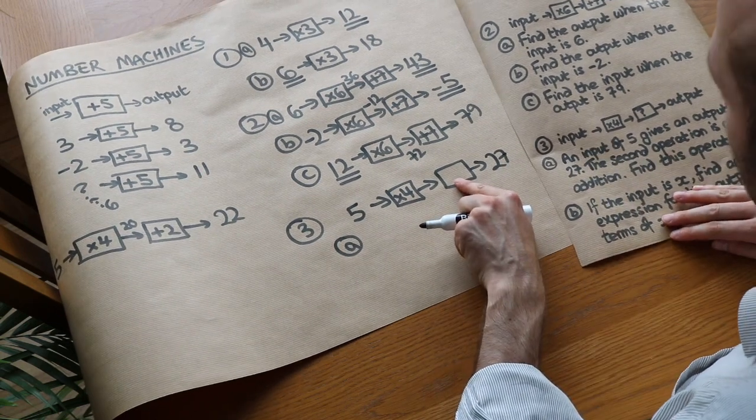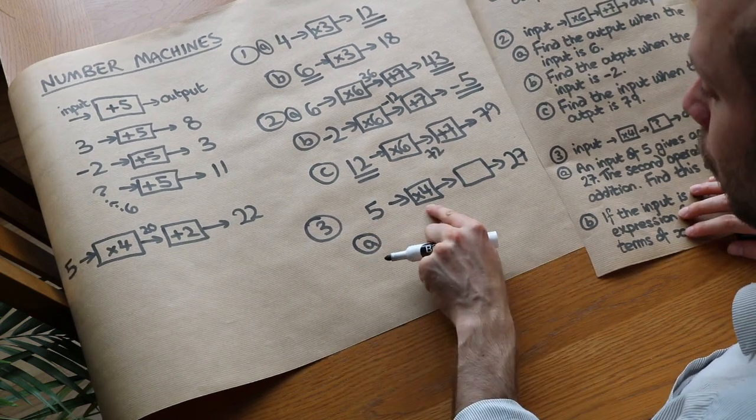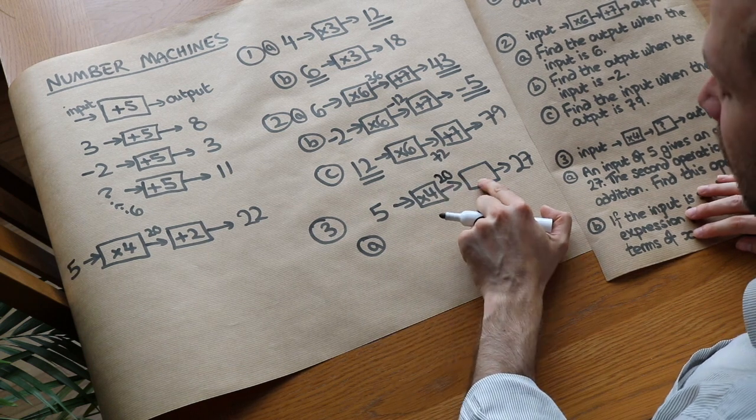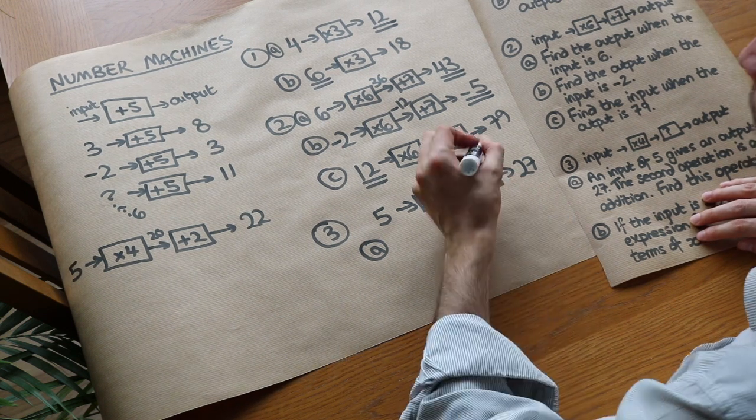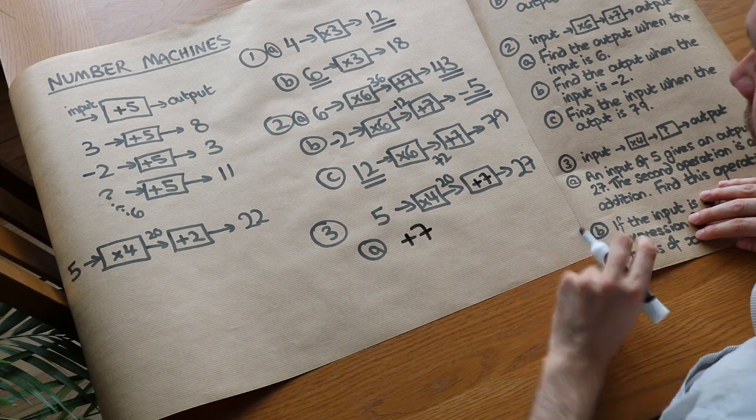So it's going to be plus something. So well, 5 times 4, that gives us 20. And then we've got to think, 20, if we have an addition and that gave us 27, what have we done to the 20? Well we've added 7, haven't we? We've added 7, so the answer is plus 7. That's the operation.